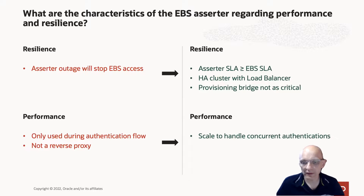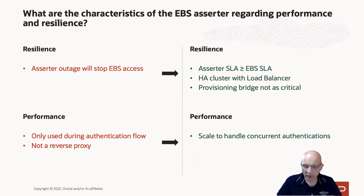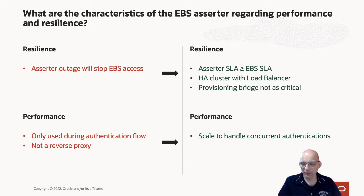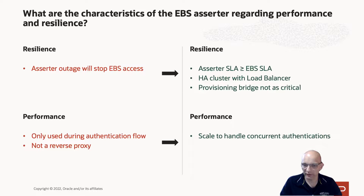From a performance point of view, how performant does the Assertor need to be? Going back to the flow, the Assertor is only used during authentication. It's not a reverse proxy — it doesn't sit in front of EBS with all requests going through it. It only works during authentication when the user gets redirected to authenticate to OCI IAM. So when thinking about performance, you need to scale the Assertor to handle the number of concurrent or peak authentications for your EBS service — slightly different performance requirements to EBS because we're looking at concurrent authentications, not concurrent sessions.